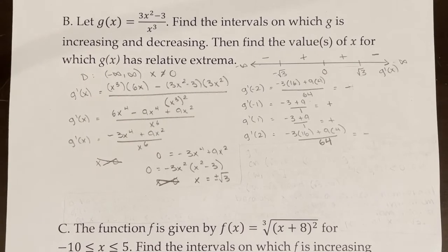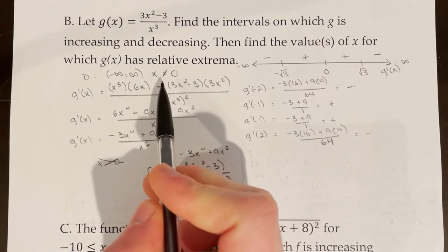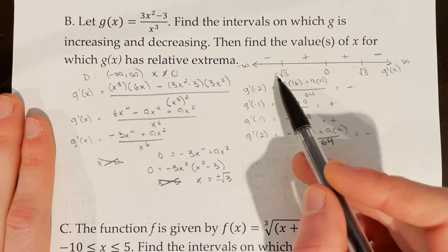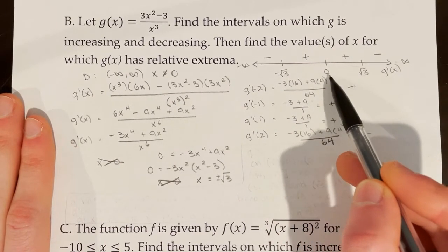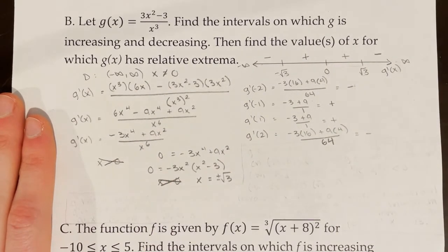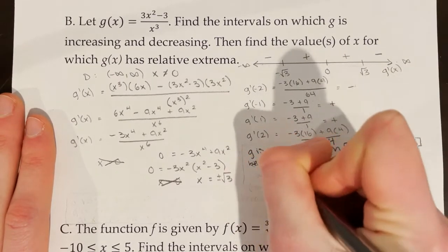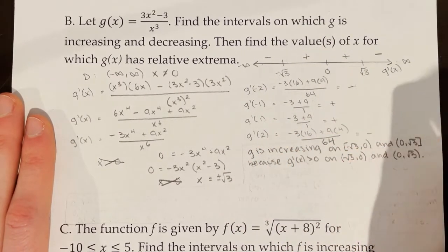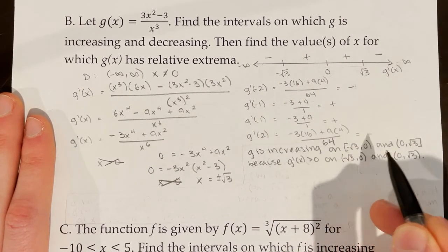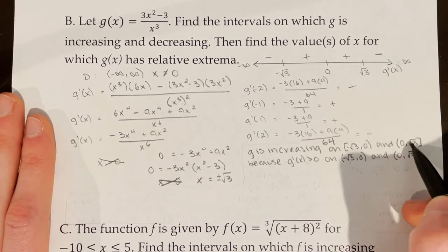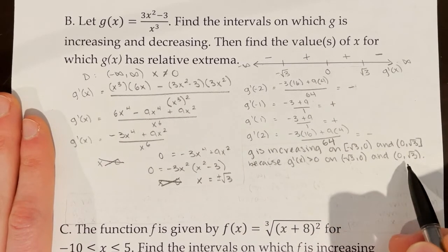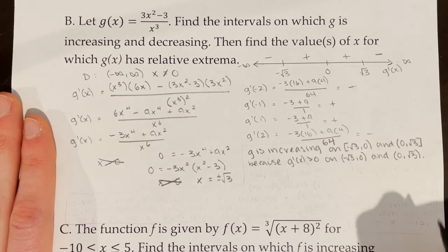When I write my conclusive statement, I have to be careful because x equals 0 is not in my domain. So I can't write that g is increasing on the closed interval from negative rad 3 to rad 3, because that includes 0. g of x is increasing on the interval from negative rad 3 (closed bracket) to 0 (open parenthesis), and from 0 (open parenthesis) to rad 3 (closed bracket), because g prime of x is greater than 0 on those open intervals.